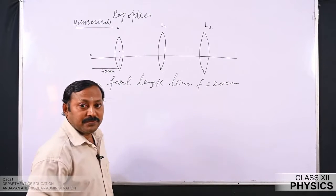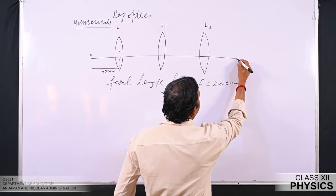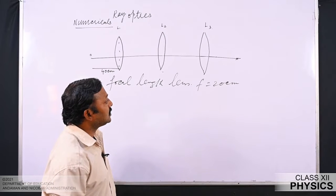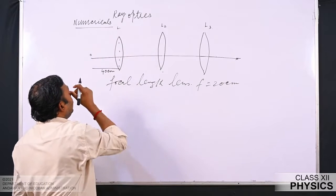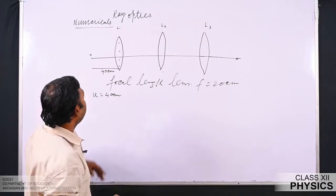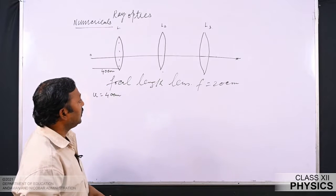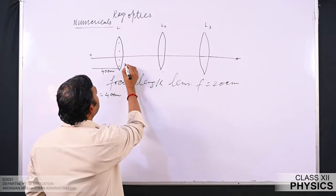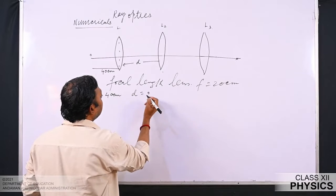The final image is formed at the focus point of L3. Let x be the focus point of L3 — the final image forms at x. The object distance for lens L1 is u equal to 40 centimeter. We are asked to find the separation between L1 and L2, let us call it d. So d equals question mark.